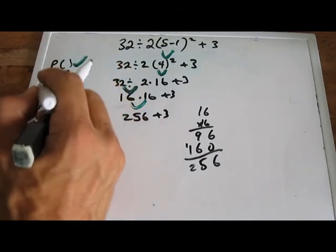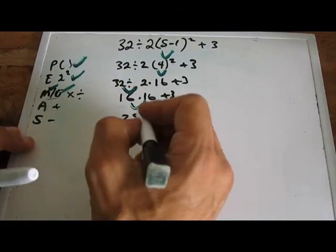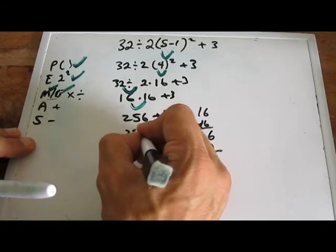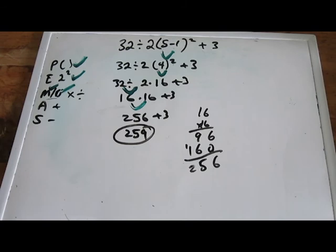So multiplication is now checked off. And the last thing on our list there is addition. So we go 256 plus 3 and we have 259. All right, so take a look at that, review it. You know, if you have any questions, scroll back. This is YouTube. You can always scroll back and I'll see you in class.